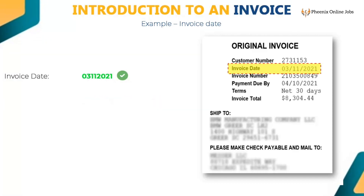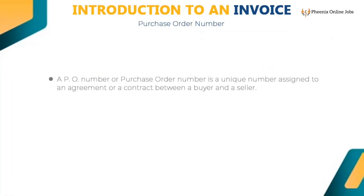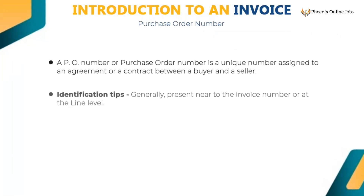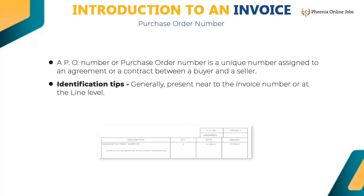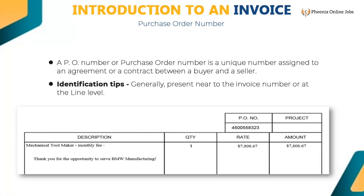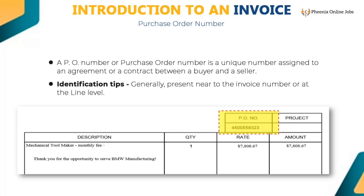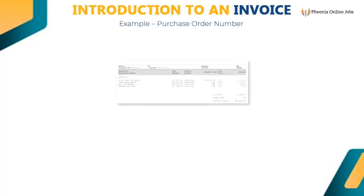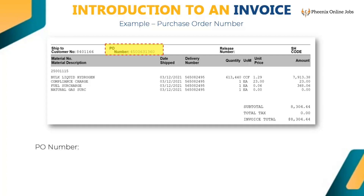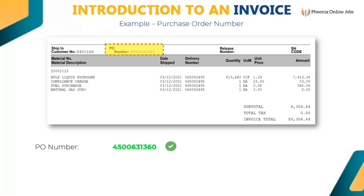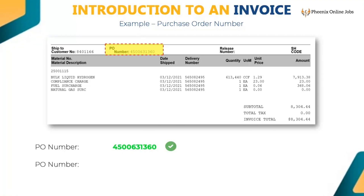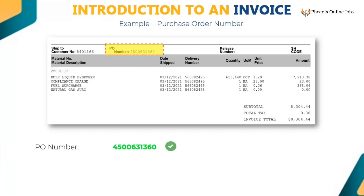A PO number or purchase order number is a unique number assigned to an agreement or contract between a buyer and a seller. It is generally present near the invoice number or at the line level. Key the data after the word 'PO number' — in this example it is 4500631360. Do not key the words 'PO number.' If 'PO number' or 'purchase order' is already populated, then remove those words.